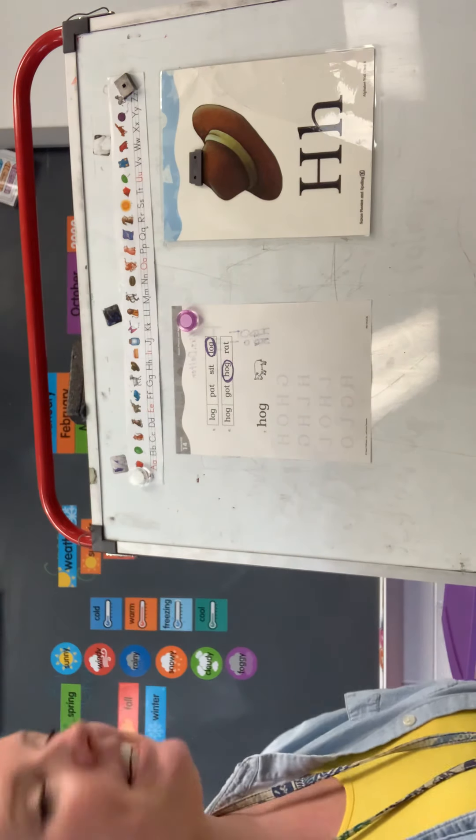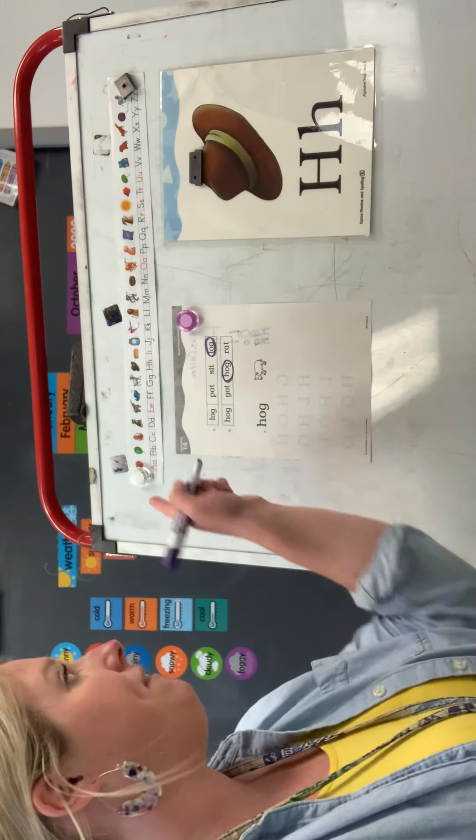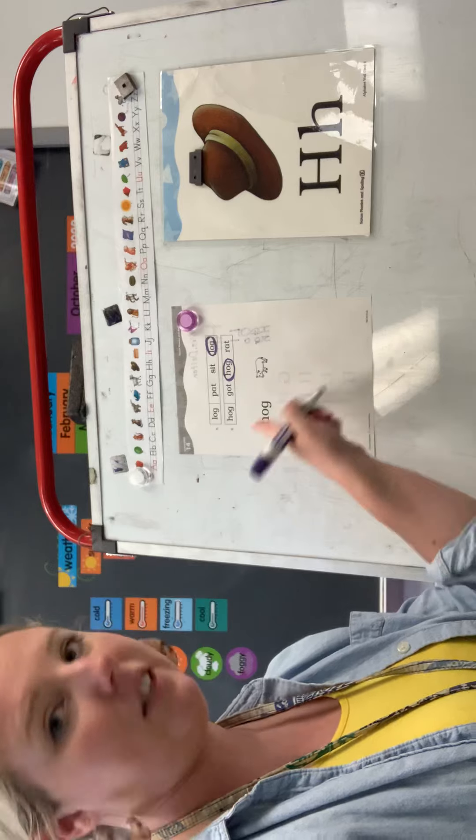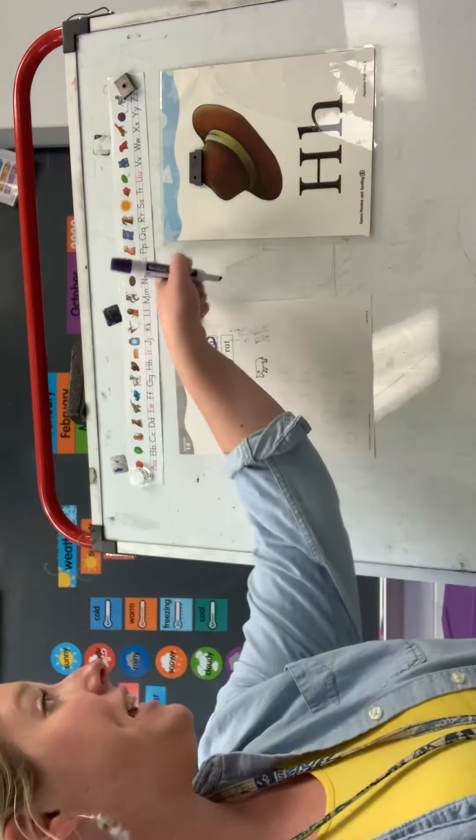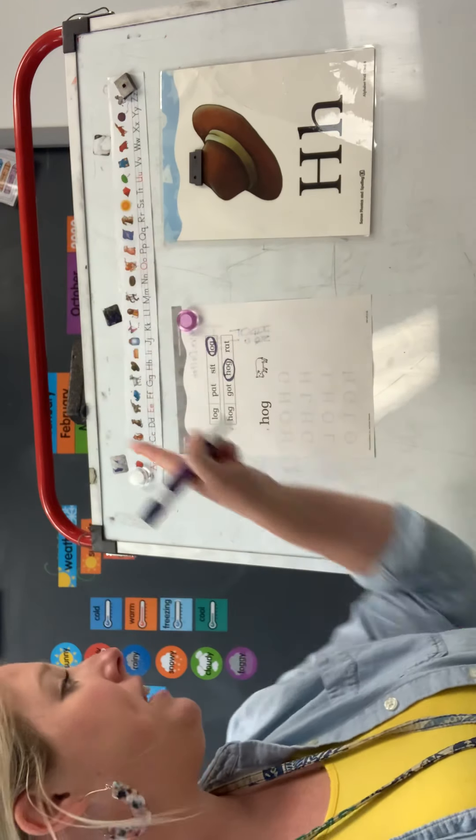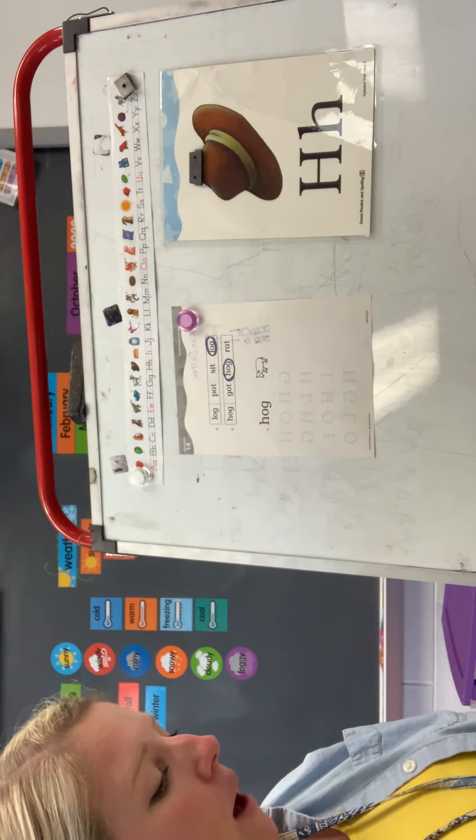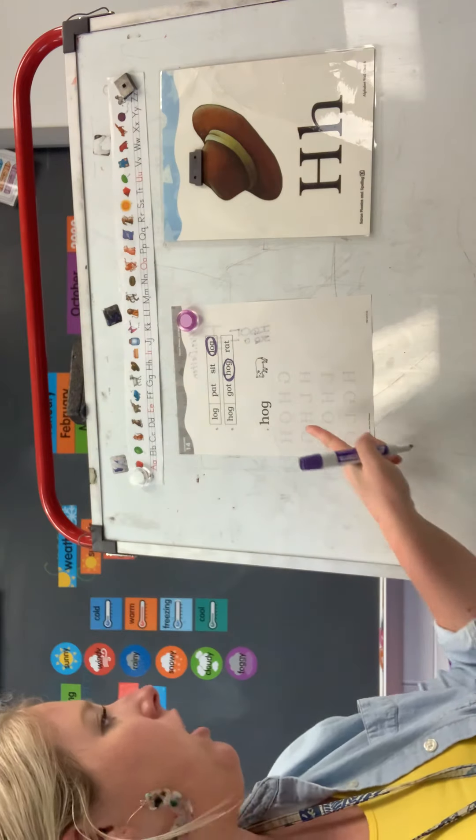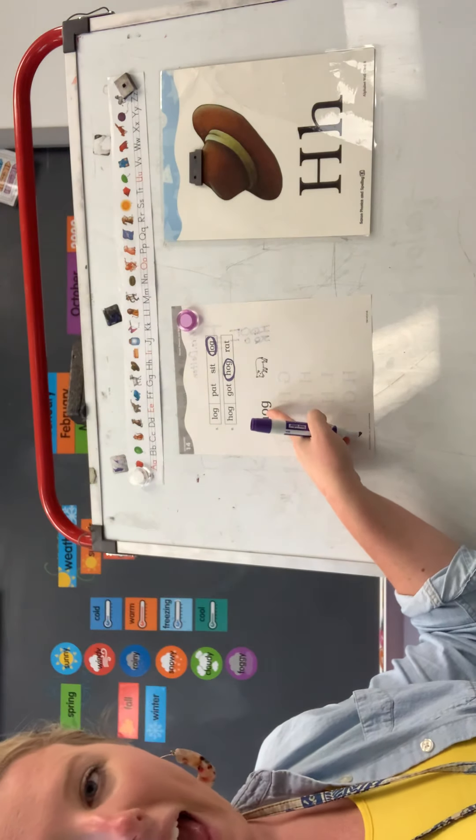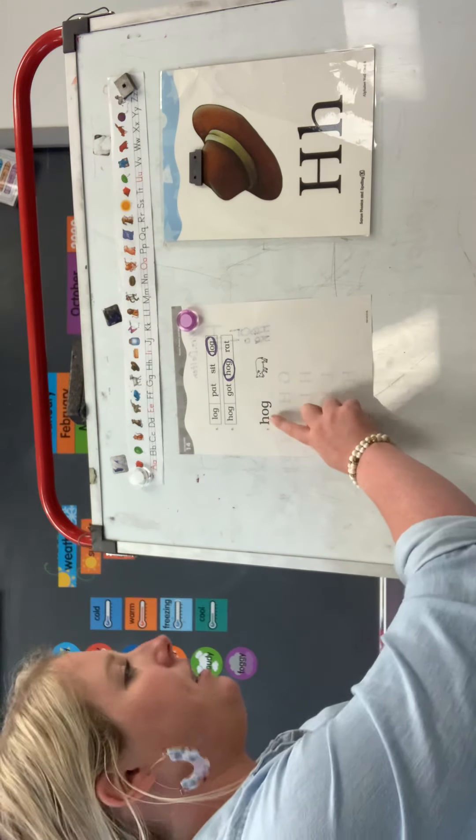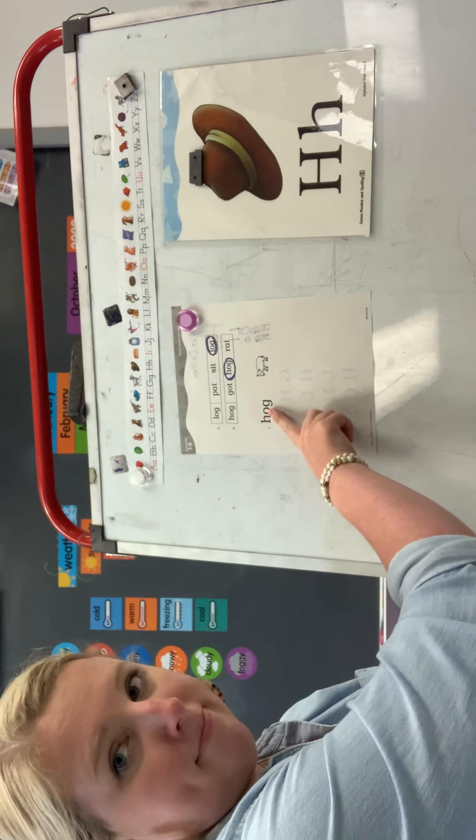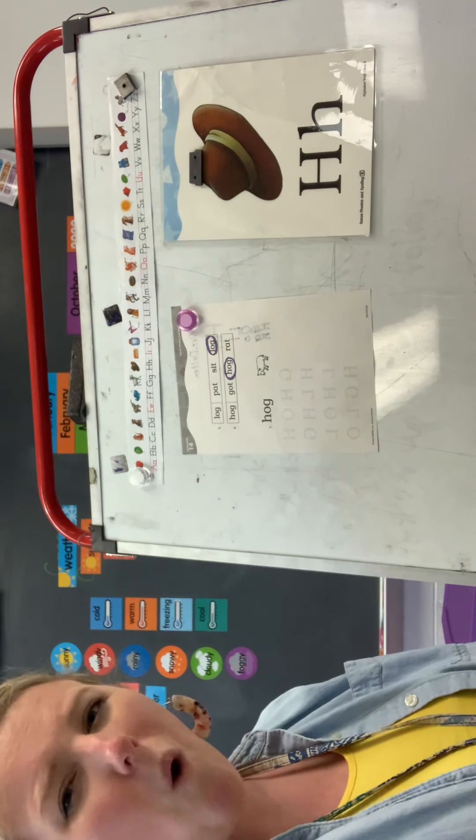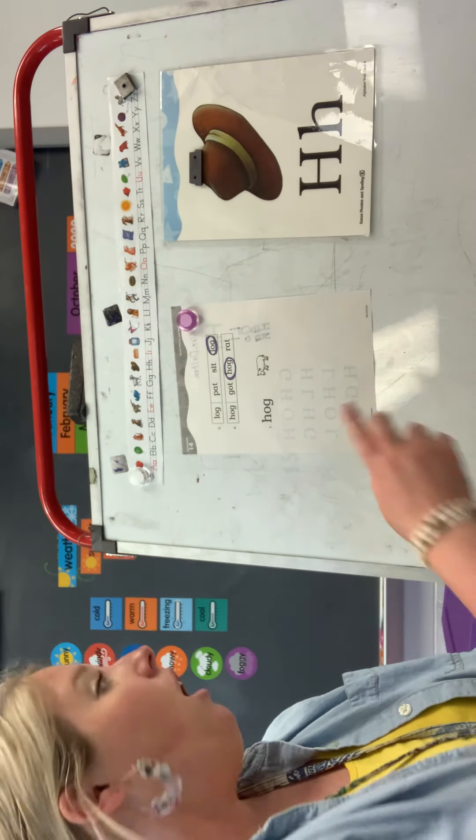Which letter is the vowel in number seven? Which one of these letters is a red letter? O. Do you see O? O is our red letter. So, that's our vowel. Put your finger under the vowel. How am I going to code this O? Am I coding it with a breve? Why? Look.